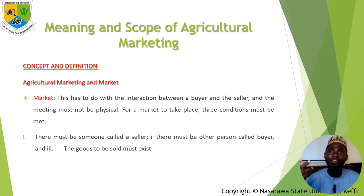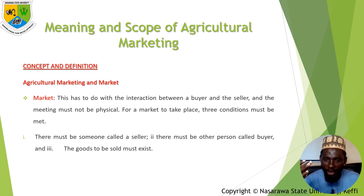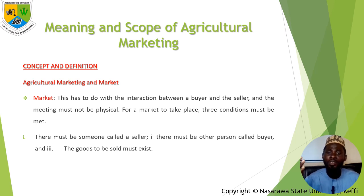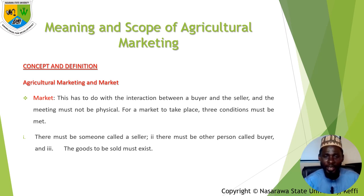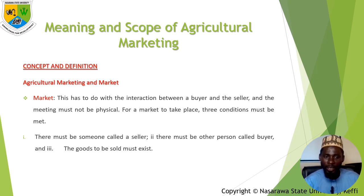For instance, if a seller of corn in Kano can negotiate with a buyer from Lagos, so long as the goods are there and both of them agree on a price, then a market has taken place.